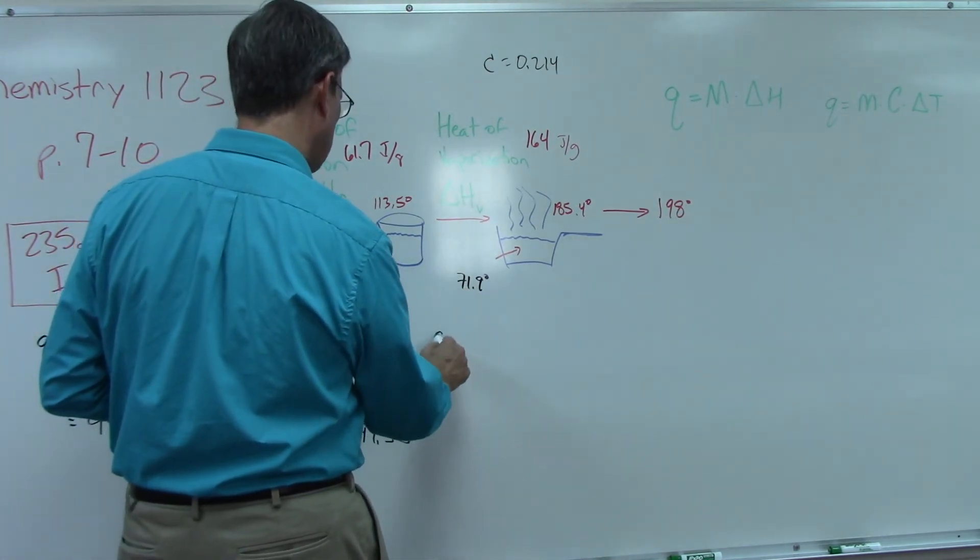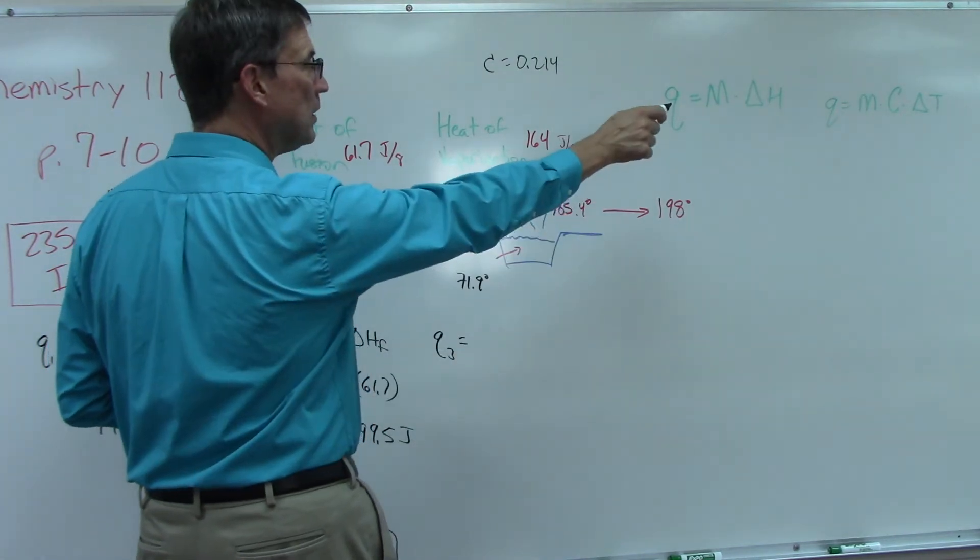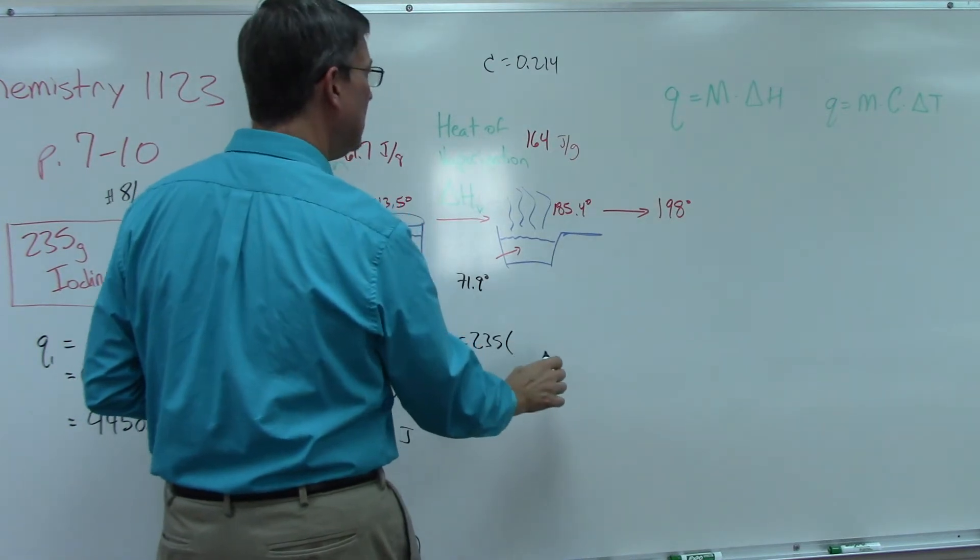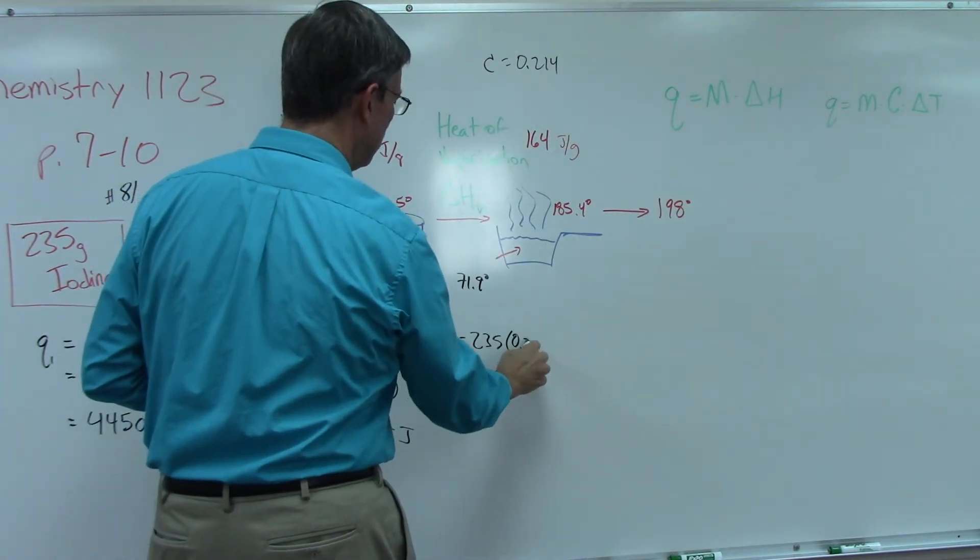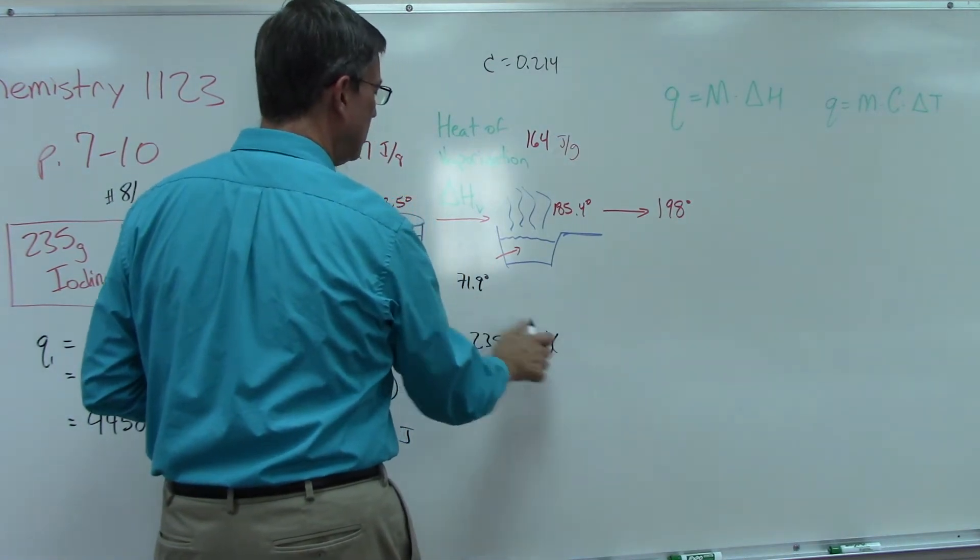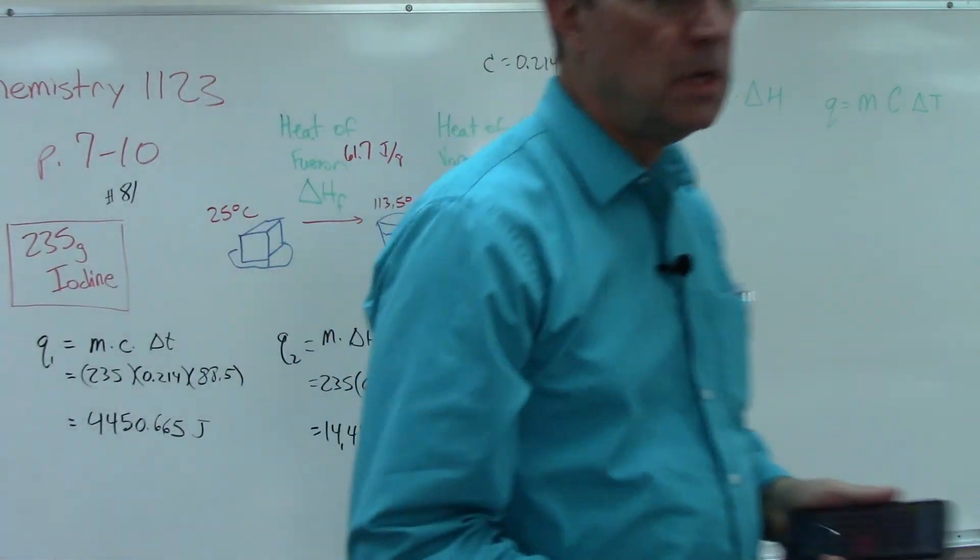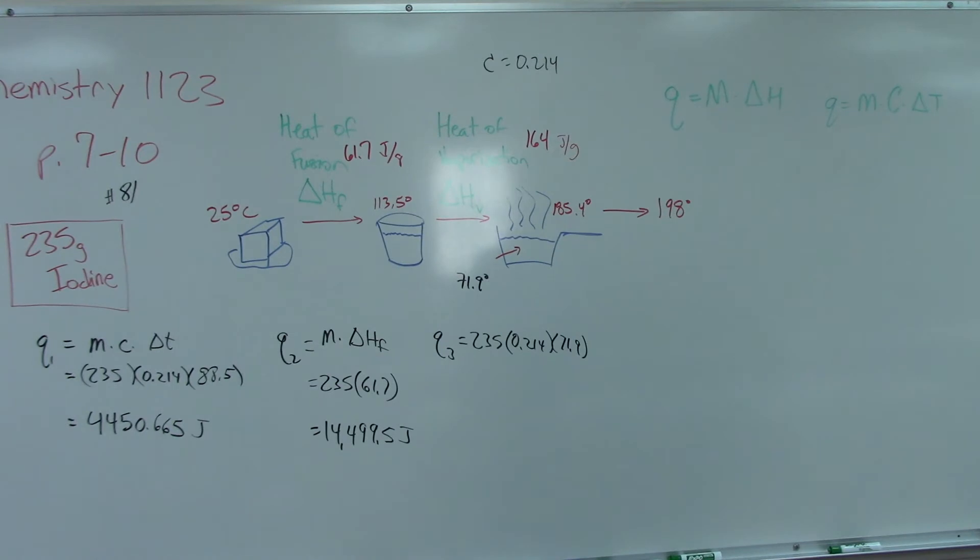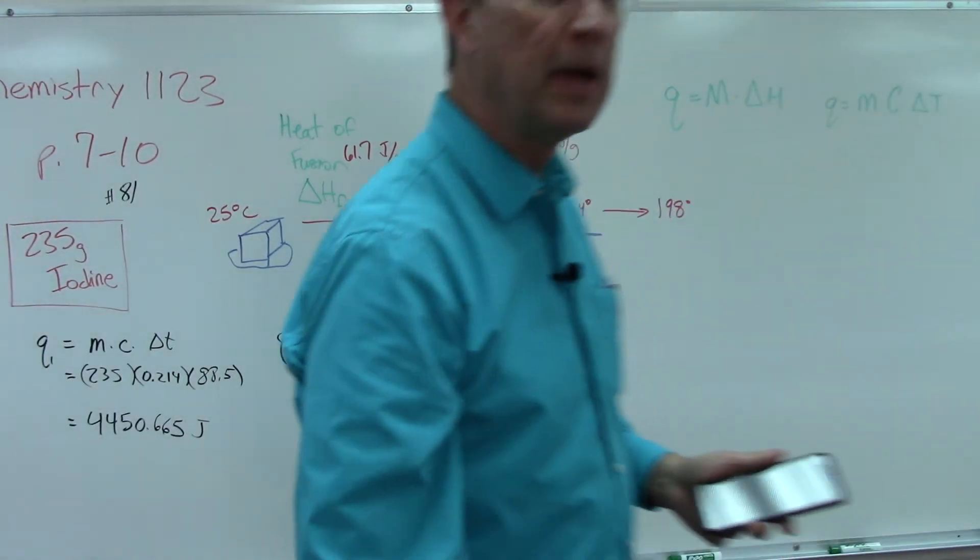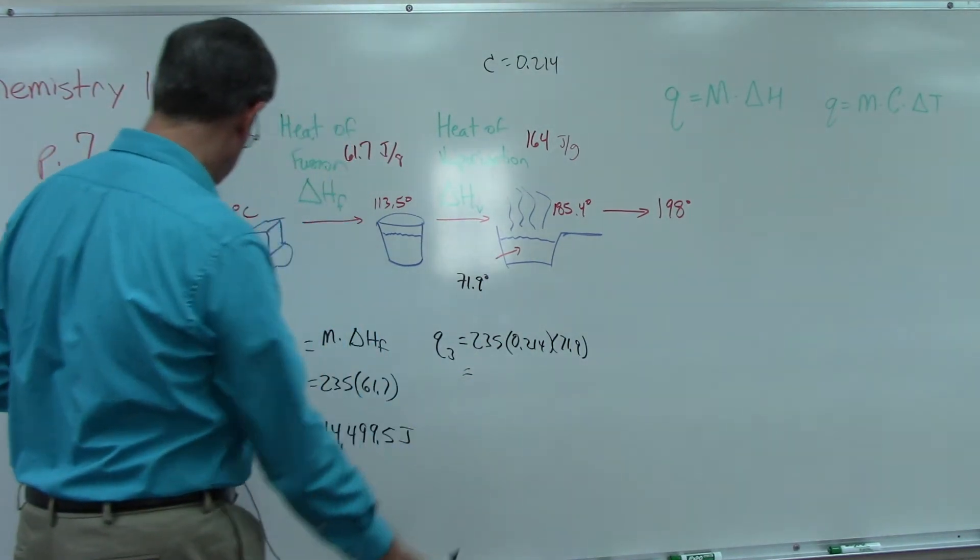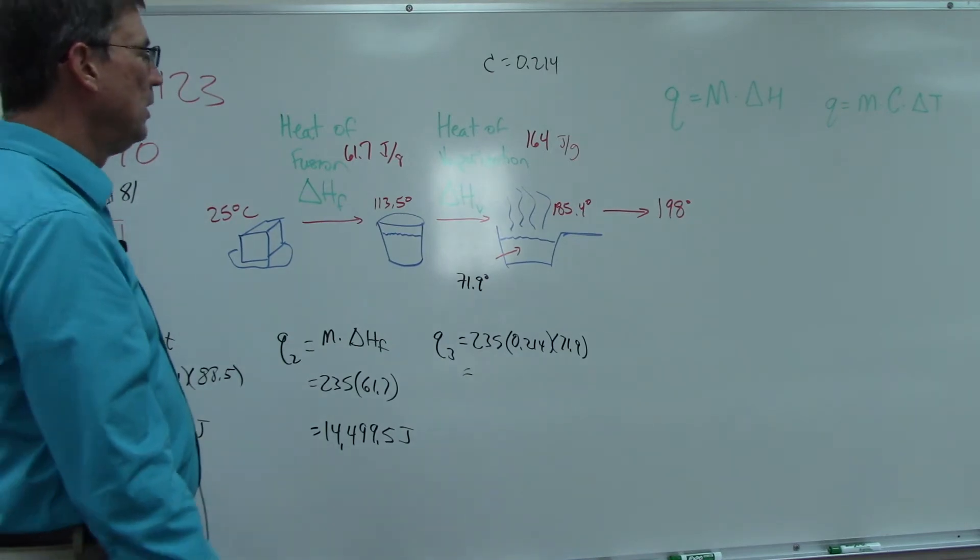Q3, we're going to take that formula over there, so the mass is still 235, C is 0.214, and now the change in temperature is 71.9. I'm not going to do the math for you. Solve that out and get a number just like we did over here.